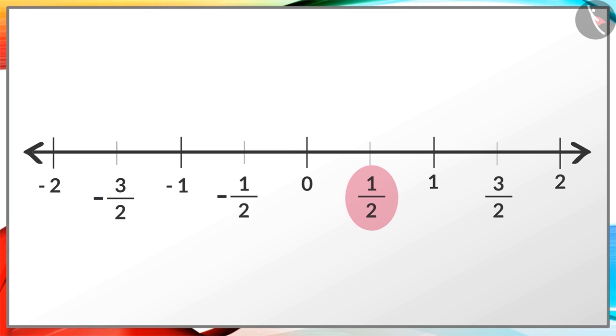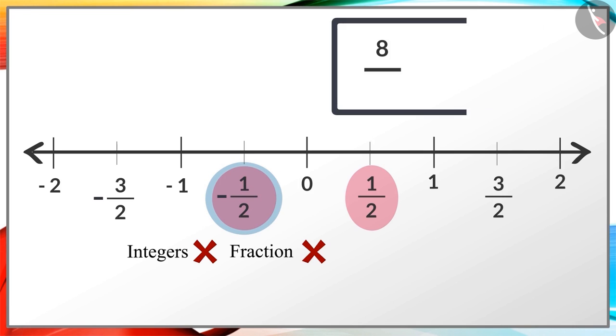If we go half a step right from zero we get one by two. But when we go to the left from zero we get negative numbers. For example, going half a step left we will get minus one by two.